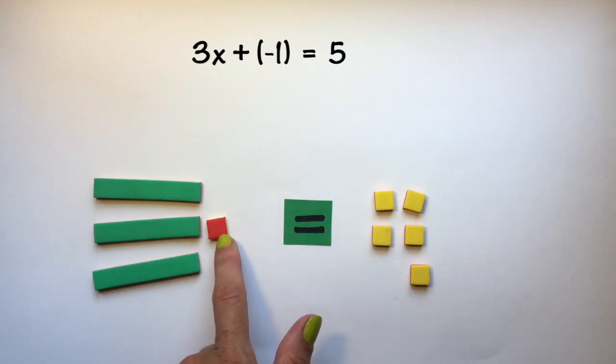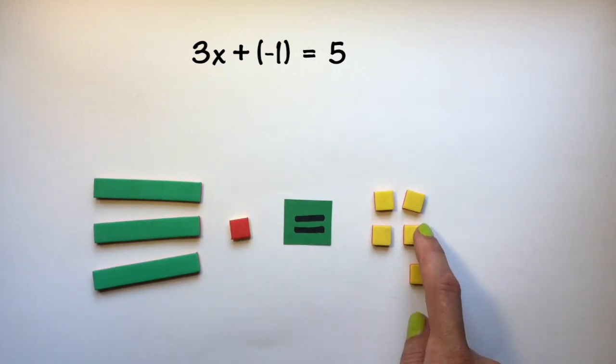So I'm going to need to remove negative 1. I don't have a negative tile I can remove on this side, so I add a zero pair.